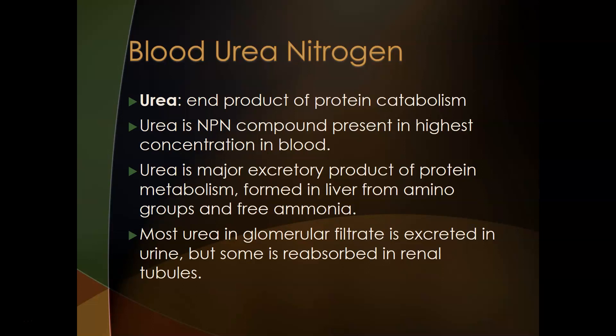Urea is the end product of protein catabolism — protein breakdown. Urea is a non-protein nitrogenous (NPN) compound present in the highest concentration in blood. Other NPNs include creatinine, uric acid, and ammonia — all considered waste products. Urea is the most abundant of these, simply because it is related to protein metabolism. Since you're constantly taking protein in, there's constantly some being broken down, which is called turnover, making urea quite abundant as a waste product.